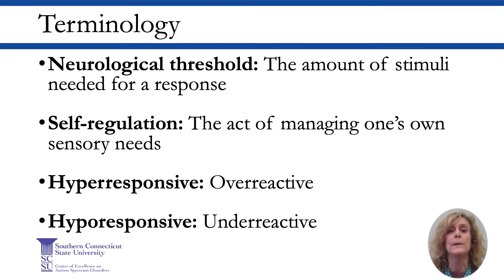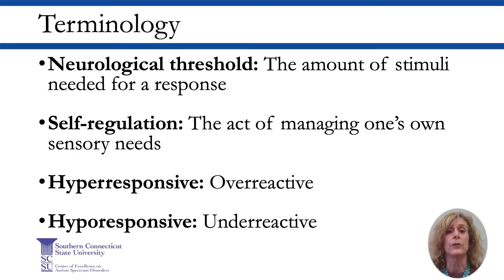There are some words that we will be talking about that are used frequently by OTs to explain different concepts in sensory processing. Neurological threshold refers to the amount of sensory stimuli that is needed to generate a response. When the nervous system responds quickly to sensory stimuli, we describe that as a low neurological threshold. When the nervous system responds slowly, we describe that as a high neurological threshold.